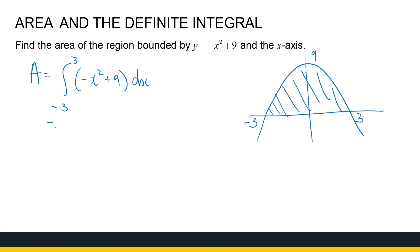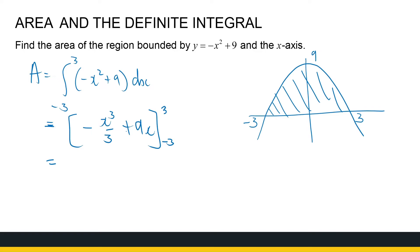We now know how to calculate definite integrals, and that is minus x cubed over 3 plus 9x, evaluated between 3 and minus 3. You can use your calculator for that — do a substitution — and you should get 36.